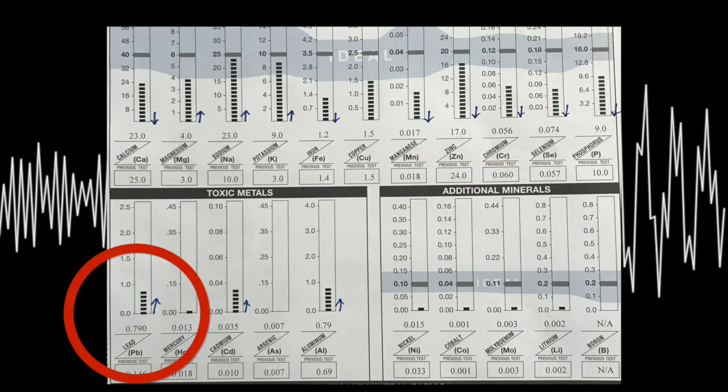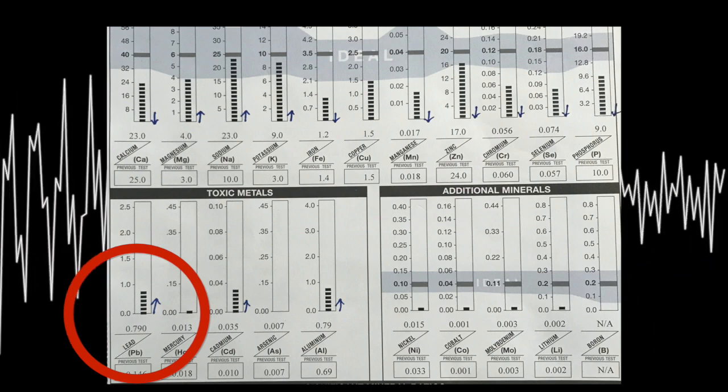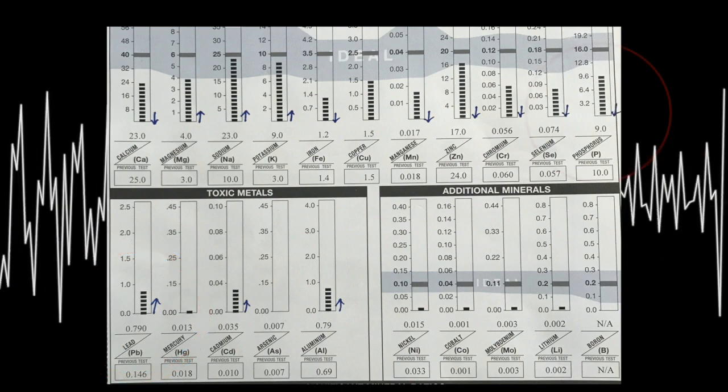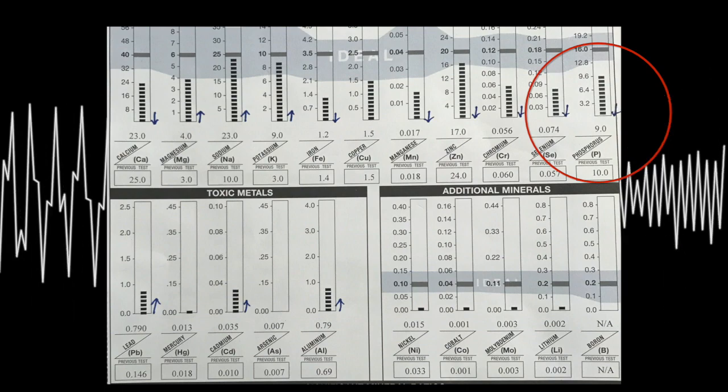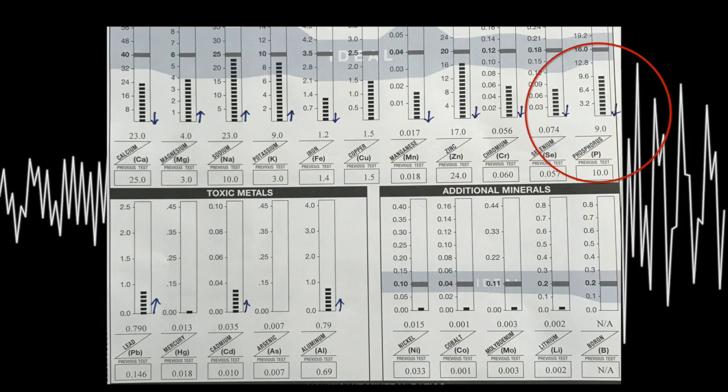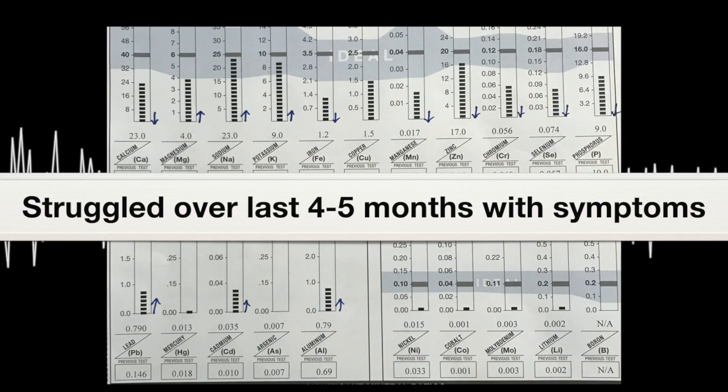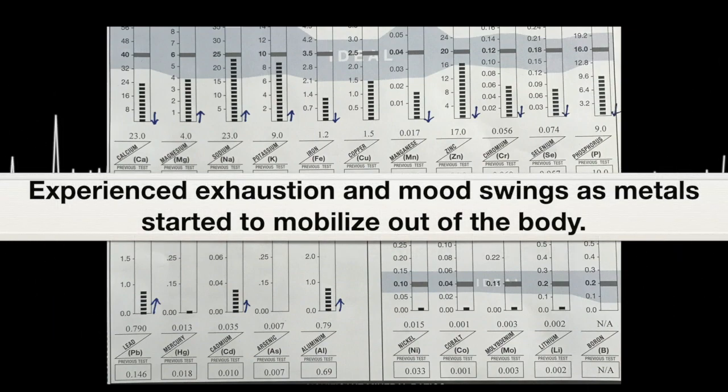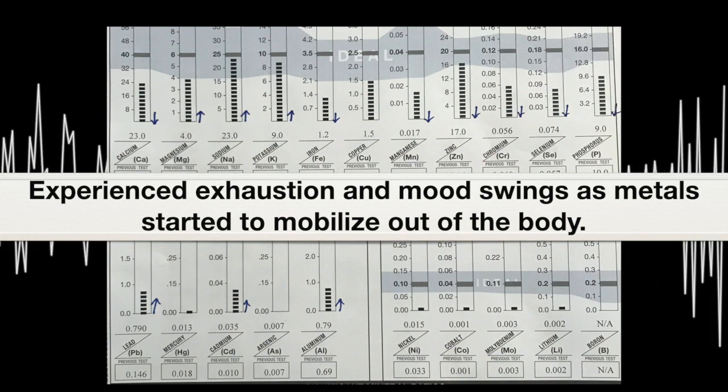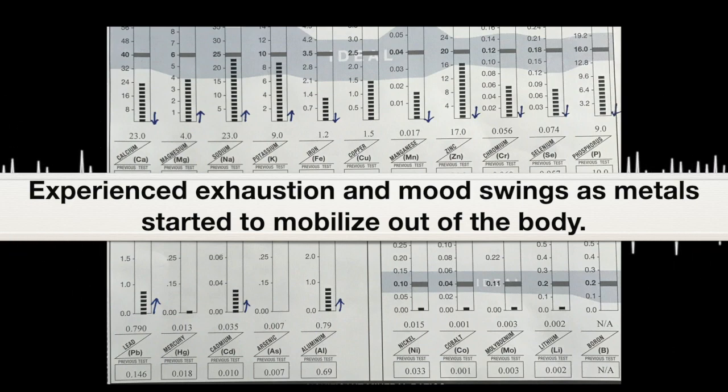So we start to see this lead being dumped. And so it takes a lot of energy to mobilize these metals out. And so the phosphorus came down, and so it was already low. So it's now at a 9 because it took a lot of energy to start mobilizing these metals out. And so she was struggling over the last four or five months, having some retracing symptoms, having some part of that exhaustion that she experienced in 2013. She had some moments of that showing up. Her emotions were a little bit all over the place because she started to feel not as good as she was doing previously because we're starting to mobilize the metals out.